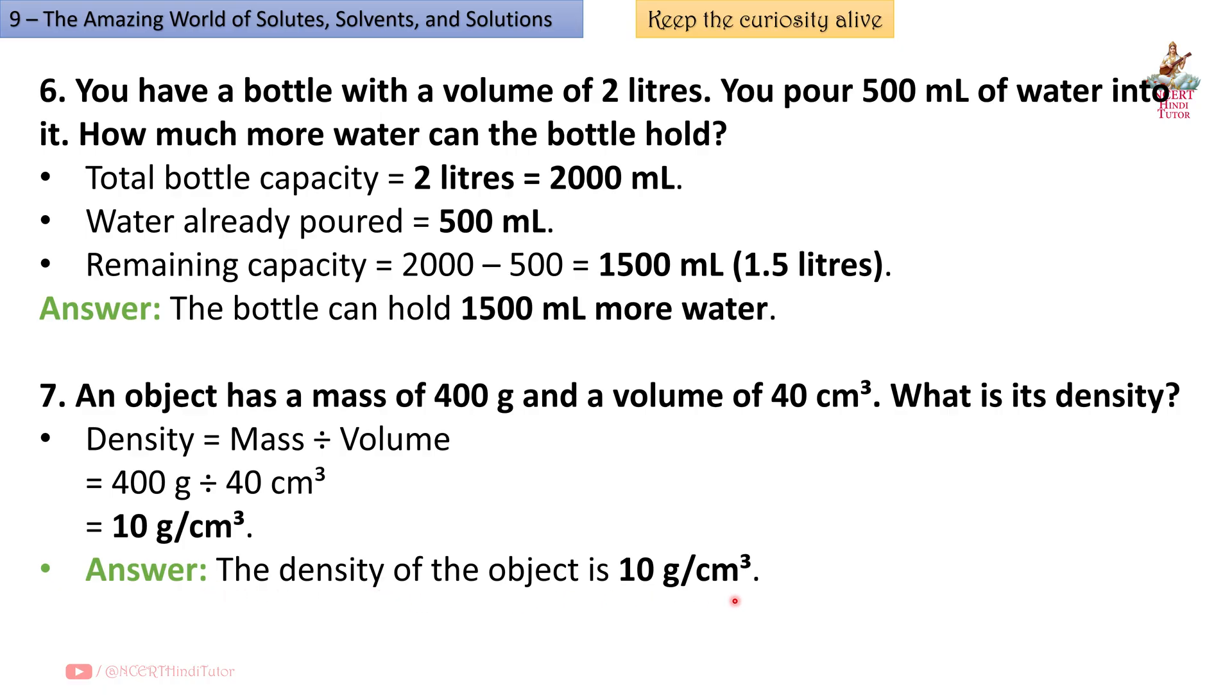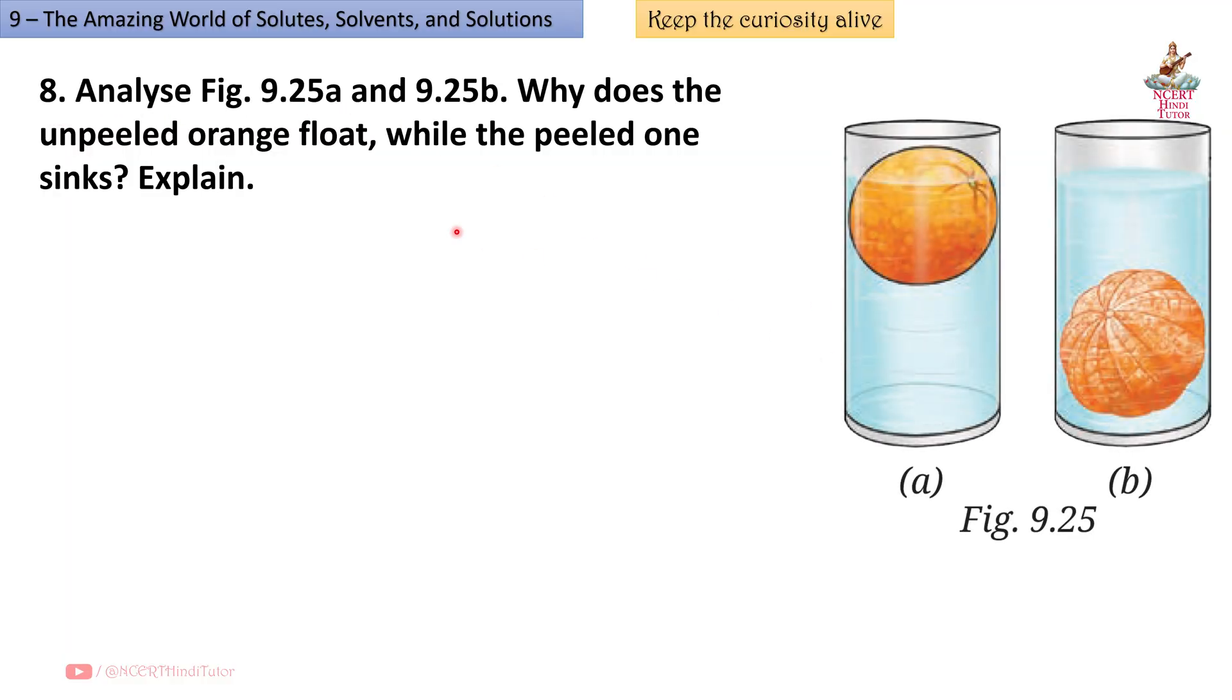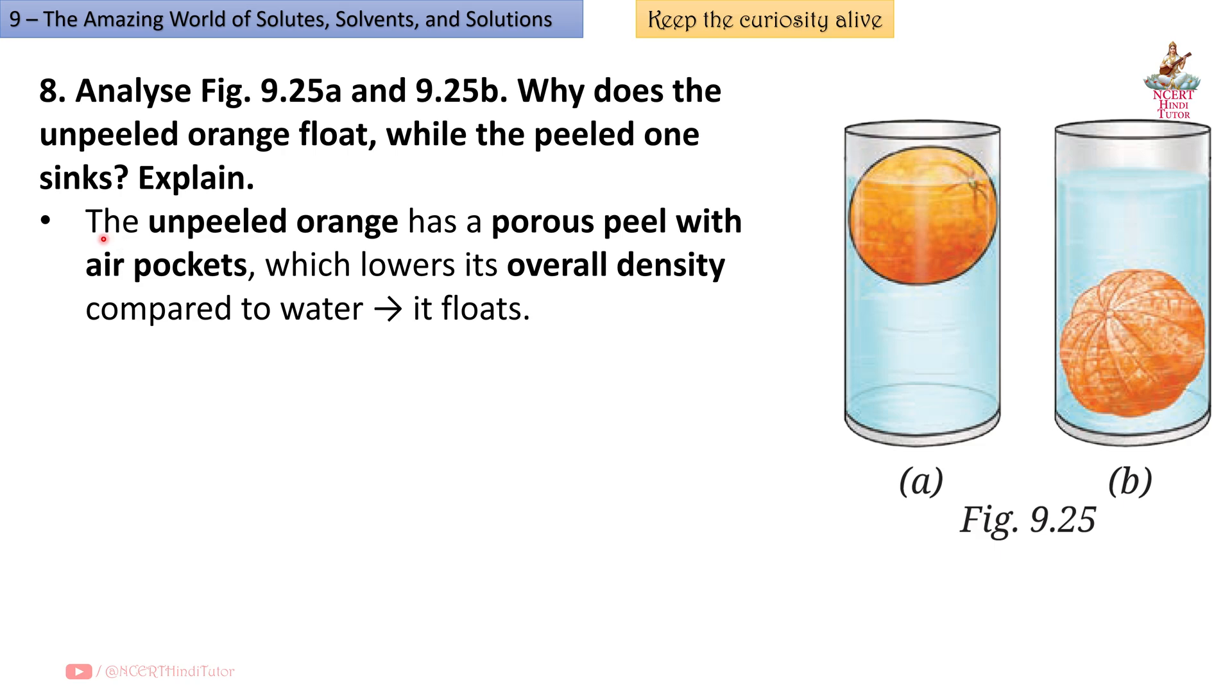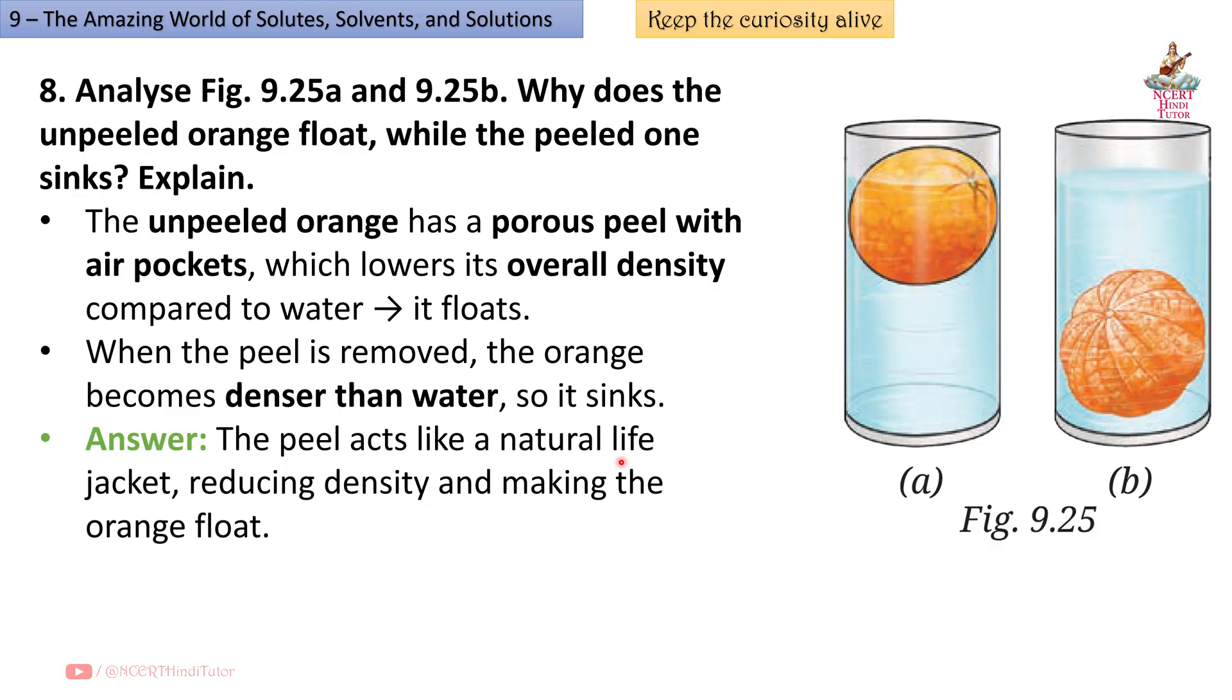Question 8: Analyze figure 9.25a this one and 9.25b this one. Why does the unpeeled orange float while the peeled one sinks? Explain. This is the unpeeled orange and this is the peeled one. Answer: The unpeeled orange has a porous peel with air pockets which lowers its overall density compared to water, it floats. When the peel is removed, the orange becomes denser than water so it sinks. The peel acts like a natural life jacket, reducing density and making the orange float.